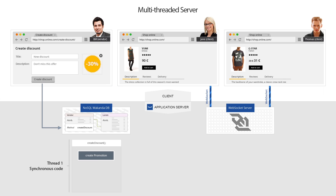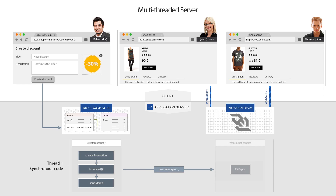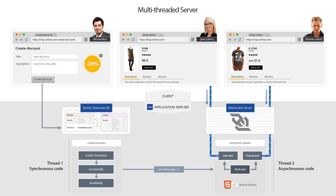Here: create promotion, broadcast, and send mail. To push data to the clients, the broadcast module only has to use the postMessage API to communicate with a WebSocket handler thread, which is a standard HTML5 shared worker running on the server. We then use the asynchronous APIs to forward the data from the SSJS thread port to the WebSocket handler ports, asking the WebSocket server to push it to the clients.